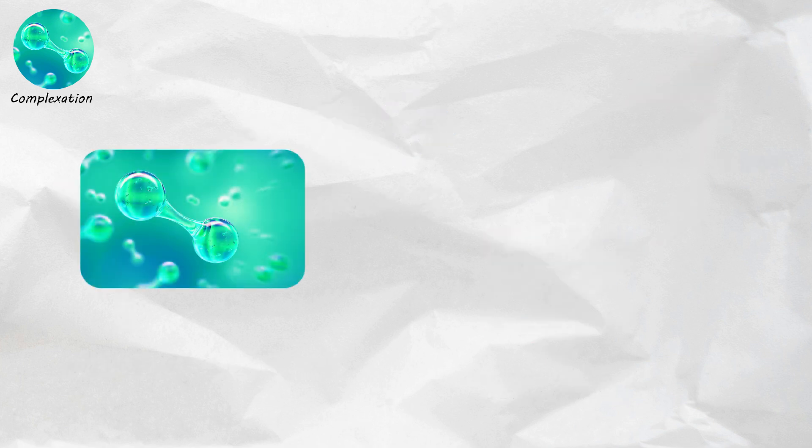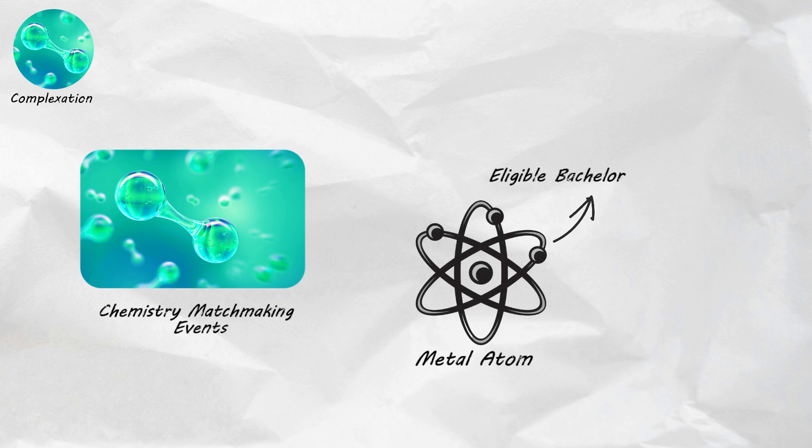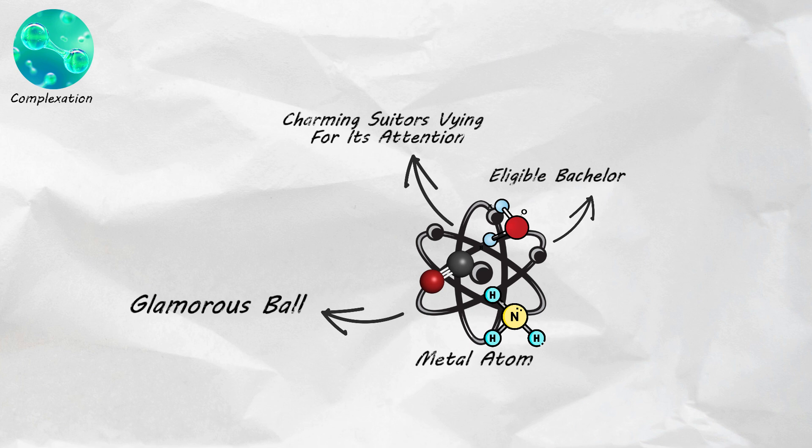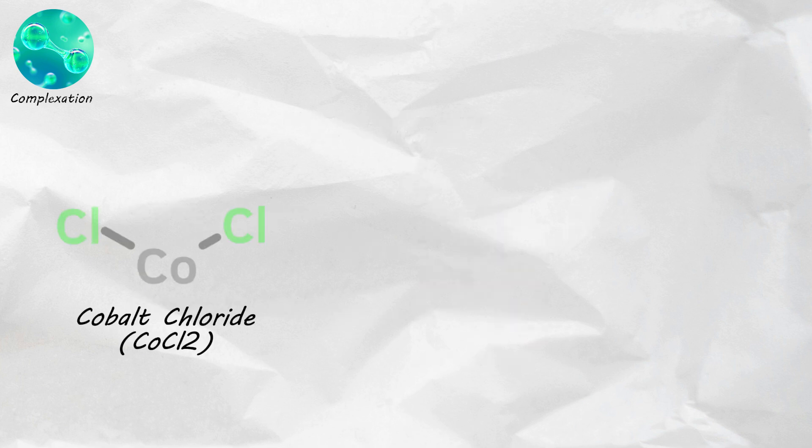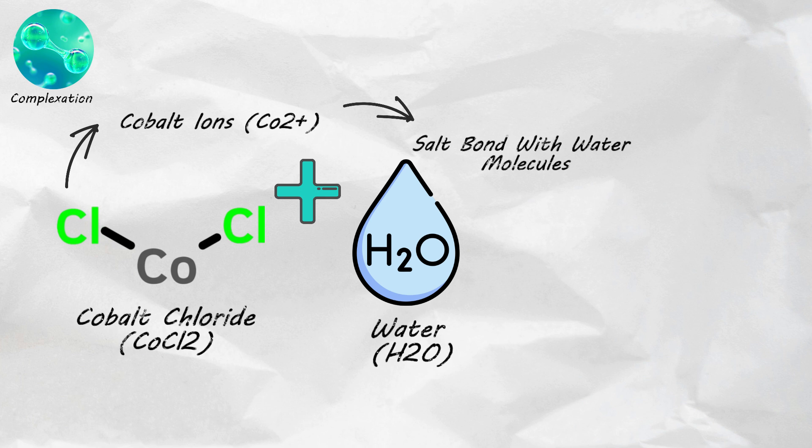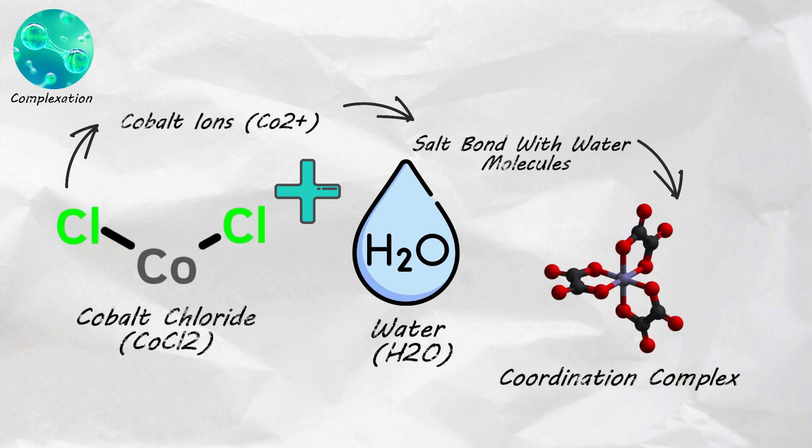Complexation reactions are like chemistry matchmaking events, where a metal atom plays the role of the eligible bachelor, and ligands are the charming suitors vying for its attention. It's like a glamorous ball where the metal atom is the star, surrounded by a retinue of ligand partners. For instance, when cobalt chloride, CoCl2, is added to water, the cobalt ions, Co2+, form a salt bond with water molecules to form the coordination complex.